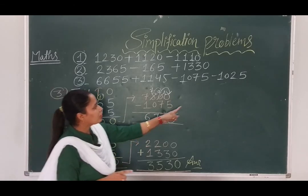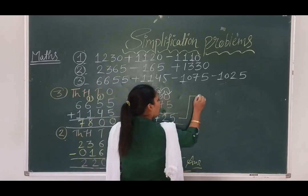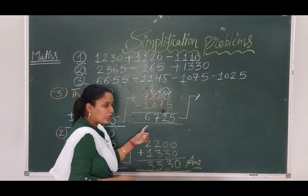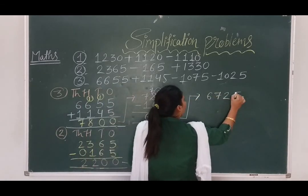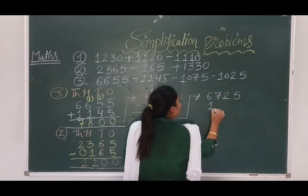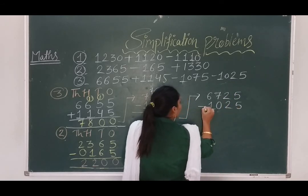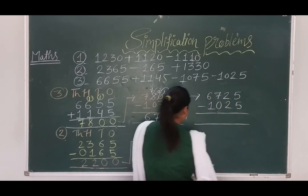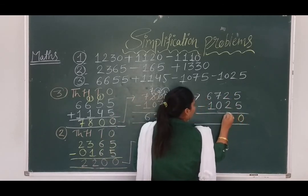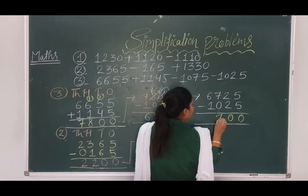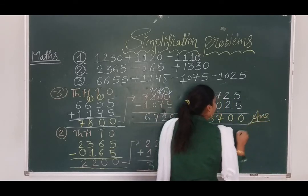We write the answer on the next line: 6725. Then we subtract 1025. Subtraction: 5 minus 5 is 0, 2 minus 2 is 0, 7 minus 0 is 7, 6 minus 1 is 5. So our final answer is 5700.